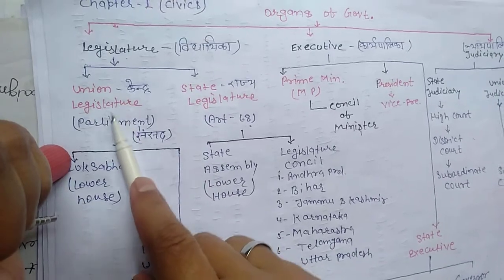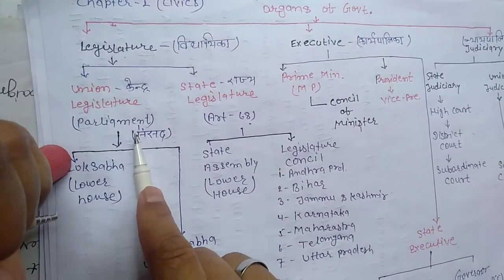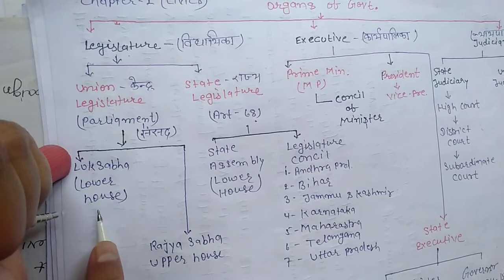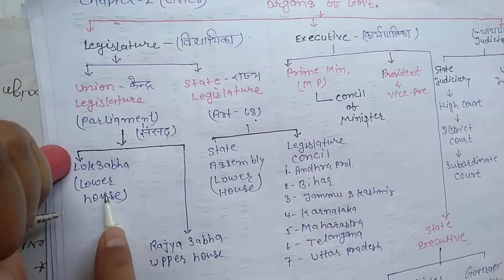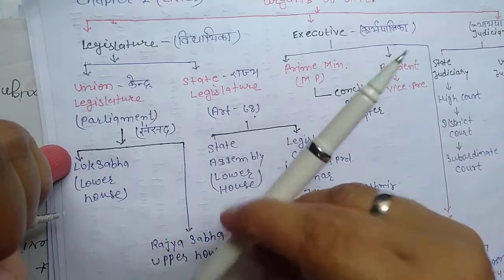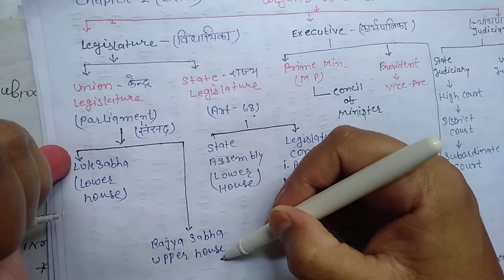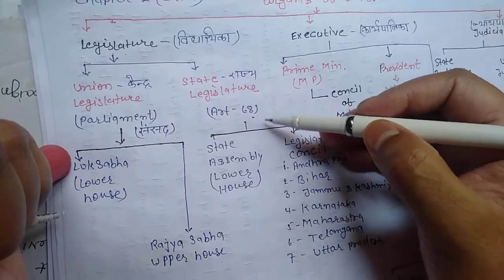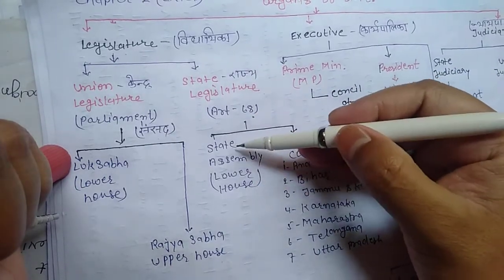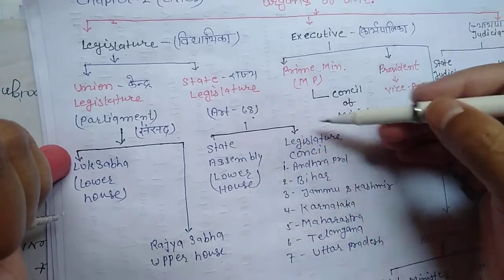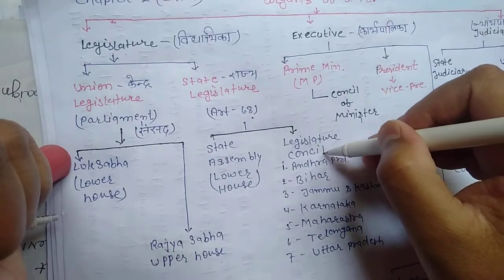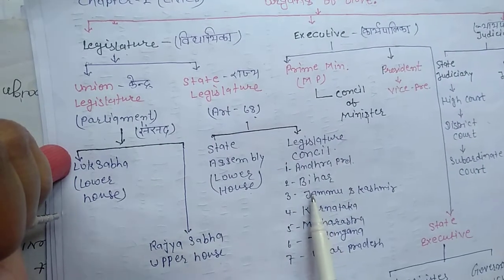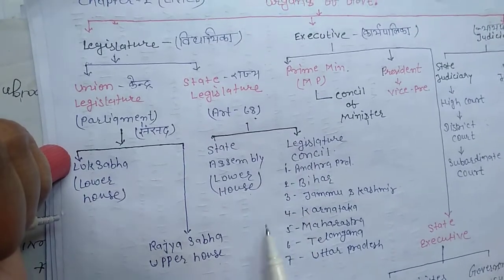What is the meaning of Union Legislature? Parliament is in two parts — one related to the lower house, and one related to the upper house. The State Legislature is also in two parts: the State Assembly, which is the lower house, and the Legislature Council, which is the upper house of the state.